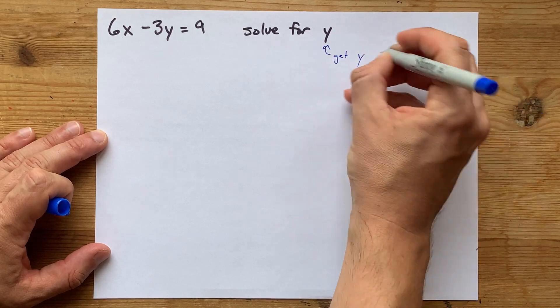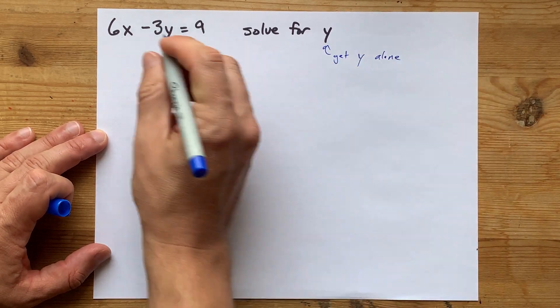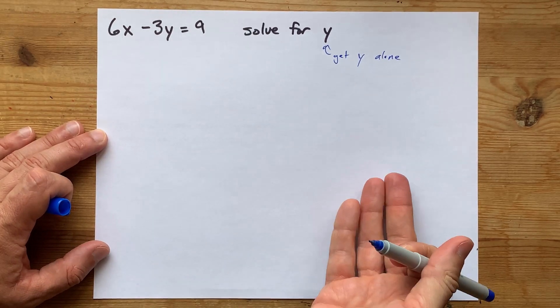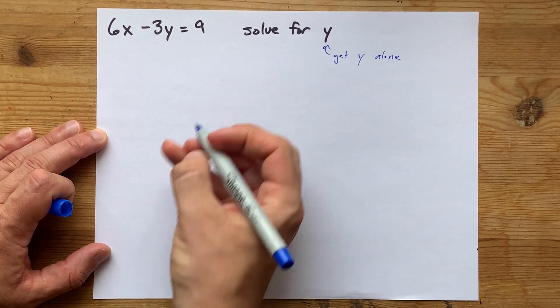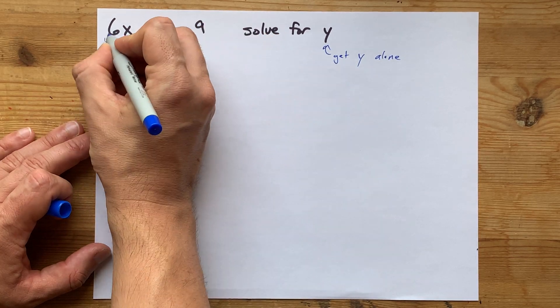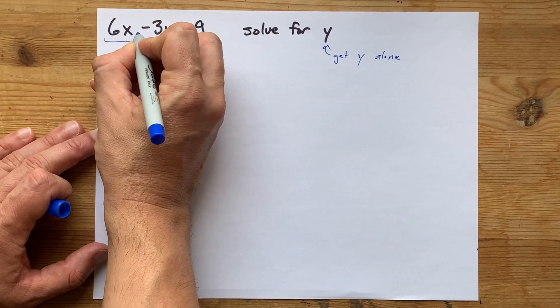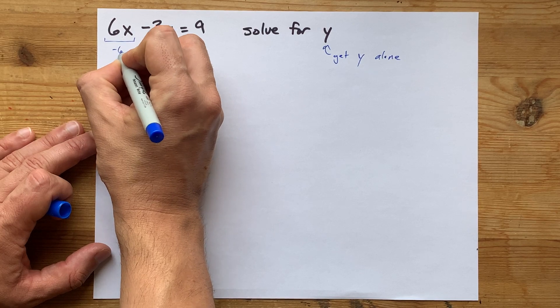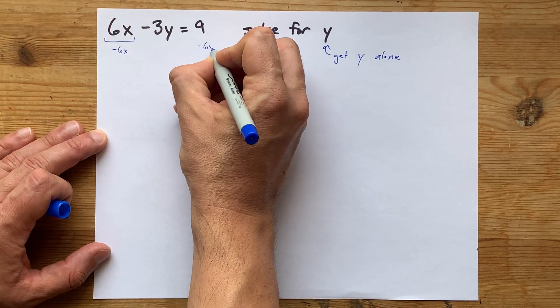Now, how can you do that? Well, all the things that are currently being done to y need to get undone. The first thing I'm going to do is move this 6x to the other side. It's currently positive 6x here. To get rid of it, I would subtract 6x from both sides.